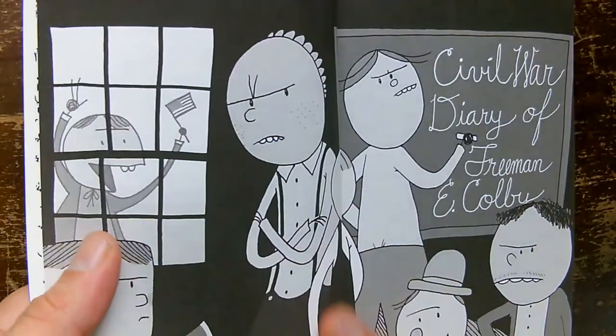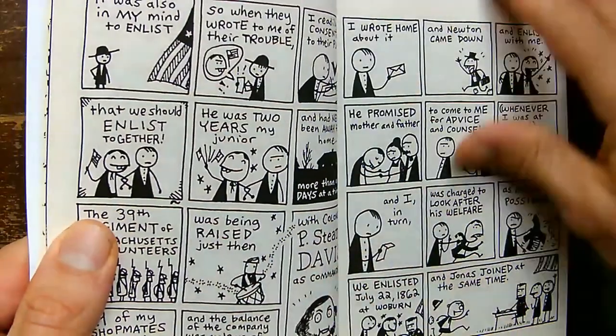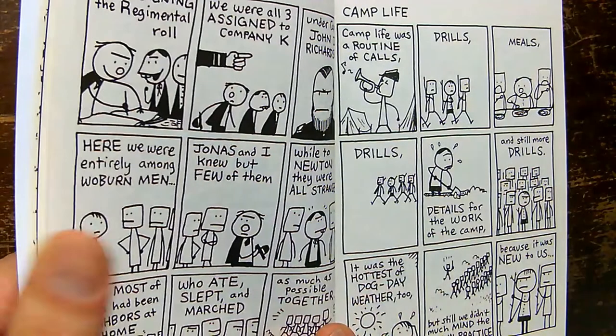So I thought today we'd go back into Freeman Colby volume one and we'll pick a scene to draw together, like maybe how about when they enlist in the Union Army in August 1862. Now you can draw along with your own paper and pencil.